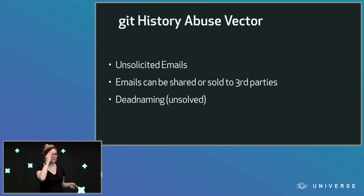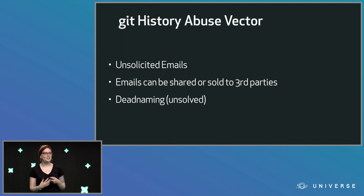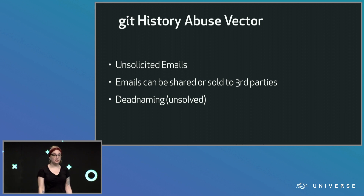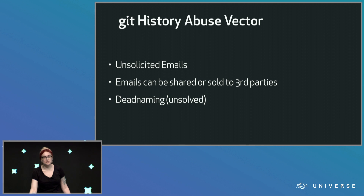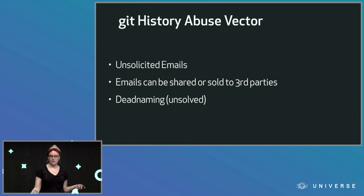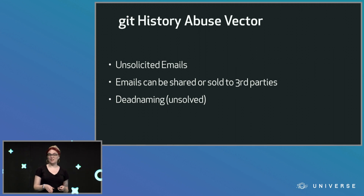And then there's deadnaming — if you have a name or identity and you go and change it, no longer wanting to use that old name or identity, that's actually unsolved in Git. What you can do is rewrite all the history to reflect your new name and identity, but you end up messing up your entire Git history in order to do this, because of the way Git stores that information. It's an unsolved problem — I have ideas, but that's for later.